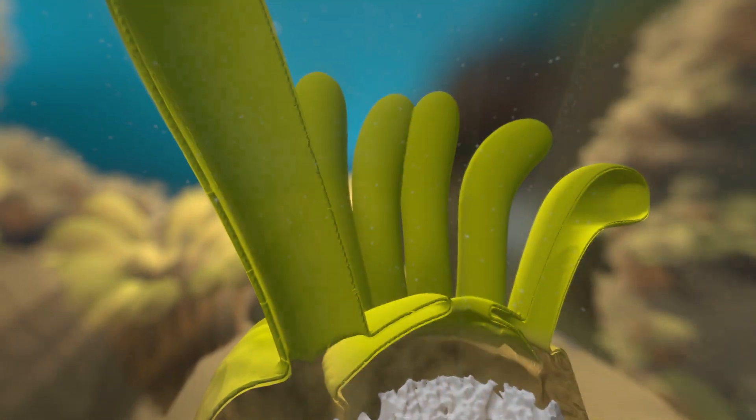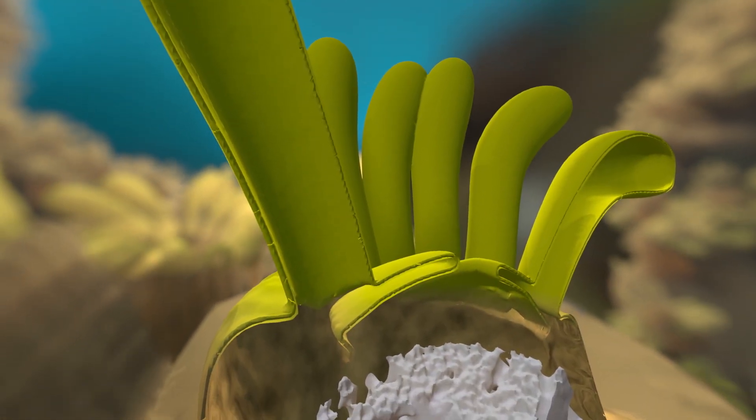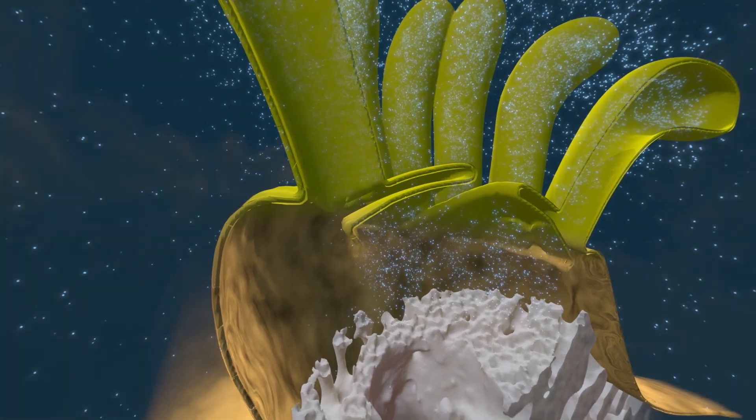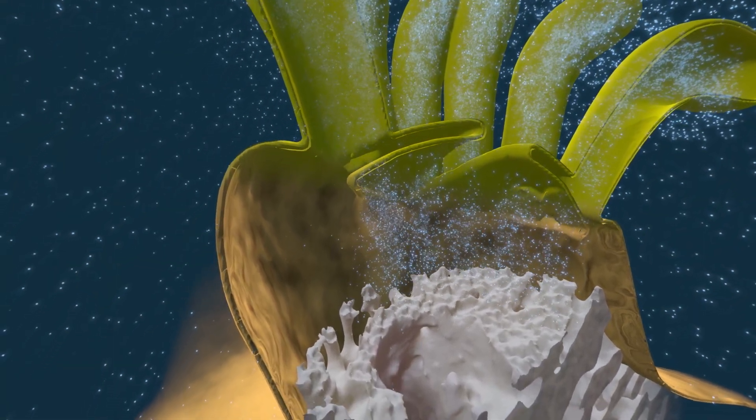Let's look inside a polyp to see how it helps build a reef. It takes carbon from algae and seawater and turns it into calcium carbonate.